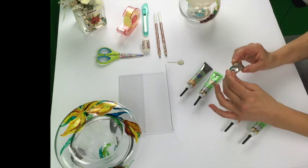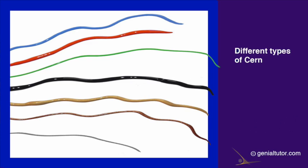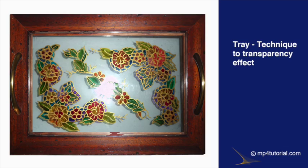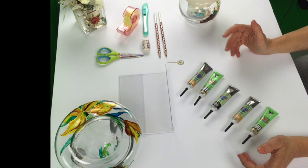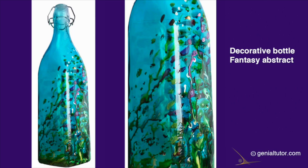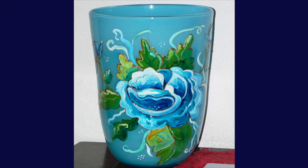When we have to choose the CERN, we must already think about the overall colors of the pictorial decoration. The choice of CERN is critical to obtaining good results in our painting. Another possibility is that of colored glass, which pairs well with metallic tints — for example, a blue glass can be matched nicely with gold or silver CERN. So the tint of the glass, as well as the internal colors of the decoration, are fundamental in determining the choice of the relief contour.